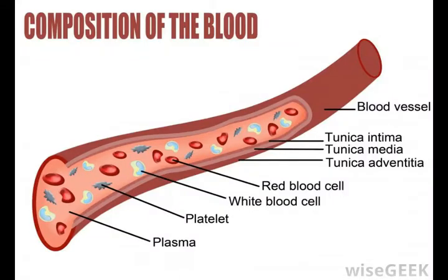Peritubular capillaries are located next to the nephrons, the main working parts of the kidney. These capillaries are very small blood vessels and are an important part of the urinary tract. As blood leaves the kidneys, minerals and ions are reabsorbed through the capillaries back into the blood. Reabsorption occurs by transcytosis, passive transport, or active transport. Ions that are not needed are excreted through the capillaries and sent to the bladder.